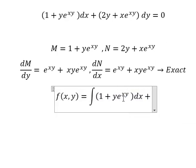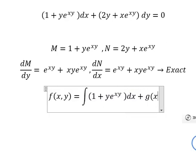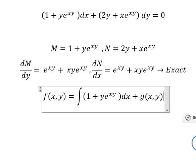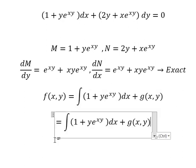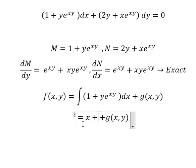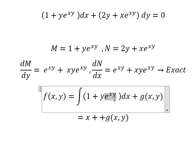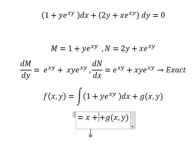We will integrate M with respect to x and add g(s, y). The integral of the first term gives s, and the integral of the second term gives e to the power of sy over y. Simplifying, we get f expressed in these terms.